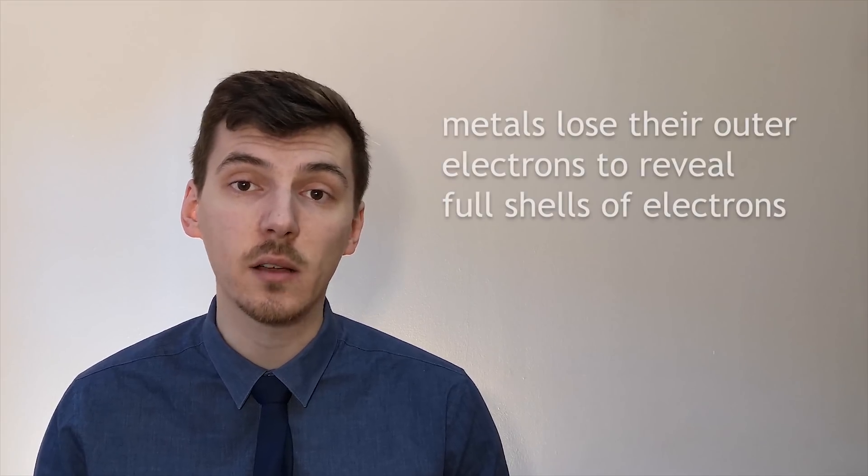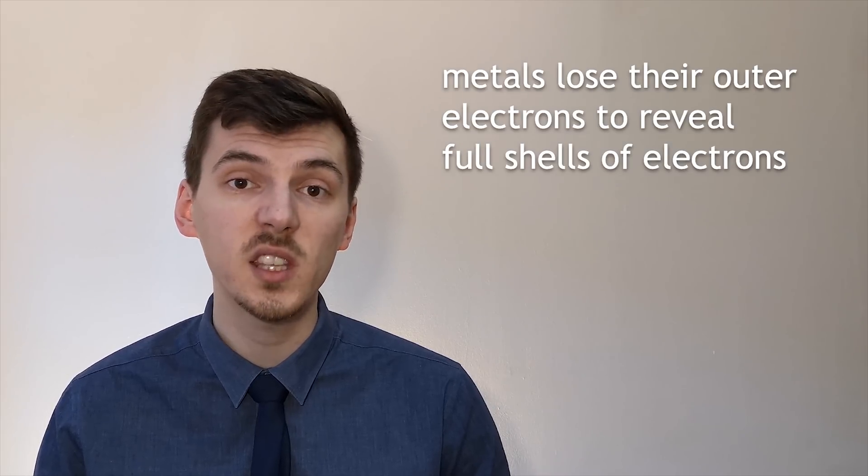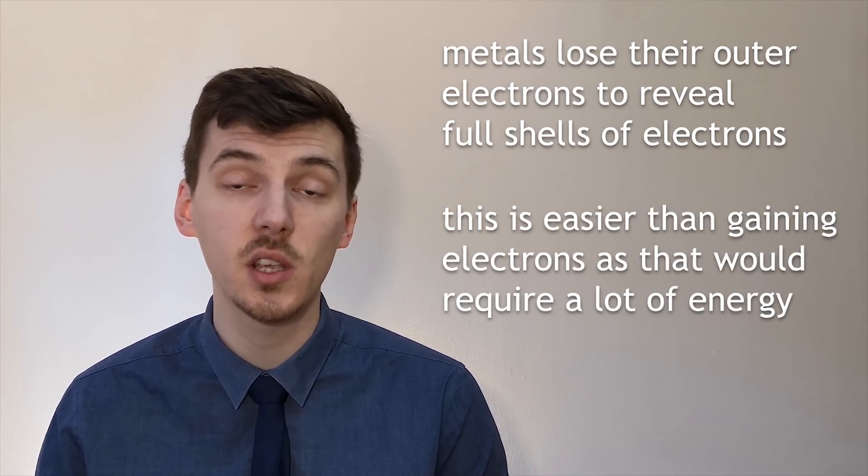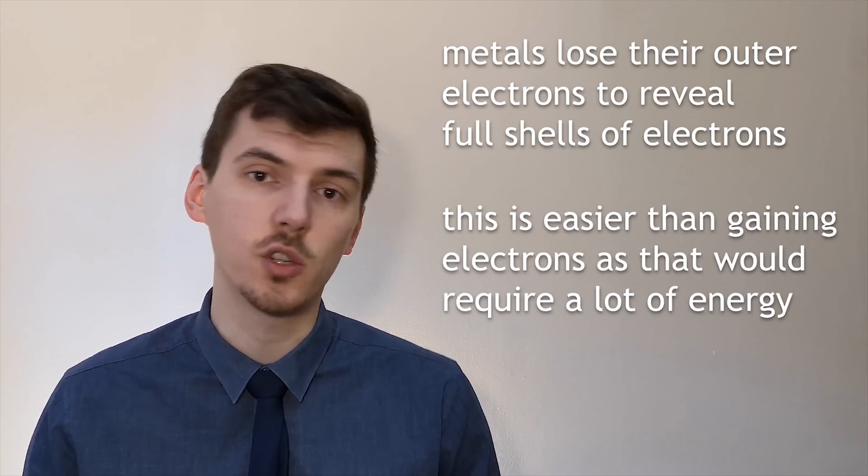Group 1 metals and group 2 metals have only one or two electrons in their outermost shell respectively. By losing these outermost electrons, these elements reveal a full shell below. This is much easier than gaining six or seven electrons as the amount of energy required is just too much.